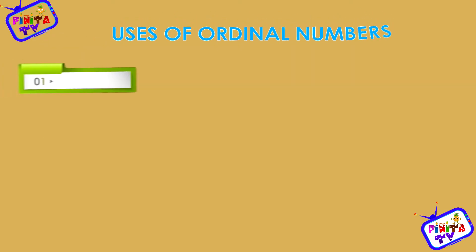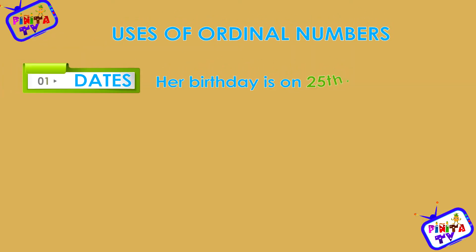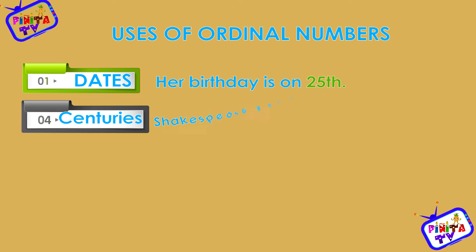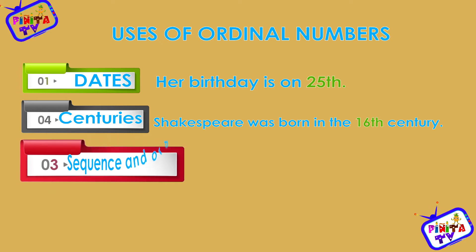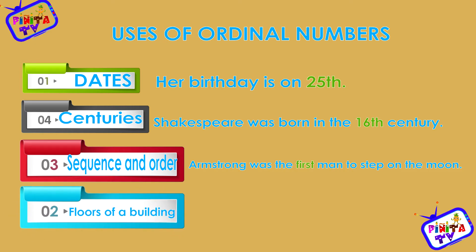Uses of ordinal numbers. Dates: her birthday is on the 25th. Centuries: Shakespeare was born in the 16th century. Sequence and order: Armstrong was the first man to step on the moon. Floors of a building: his office is on the 5th floor.